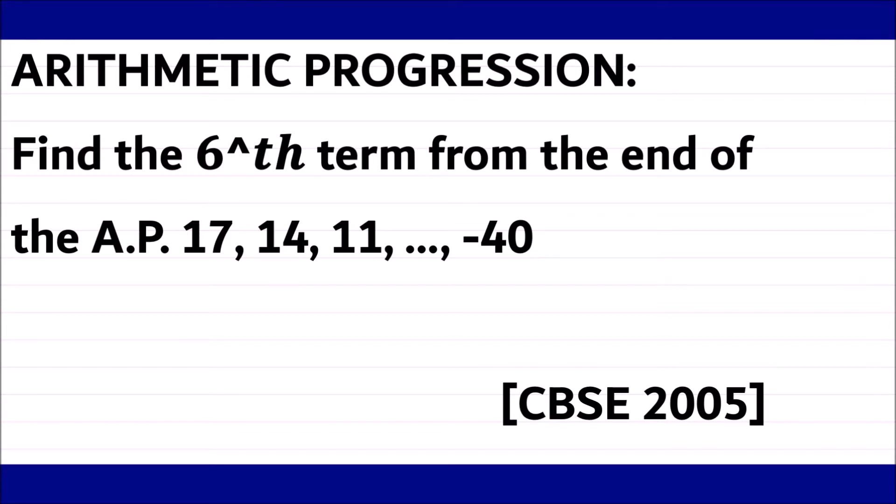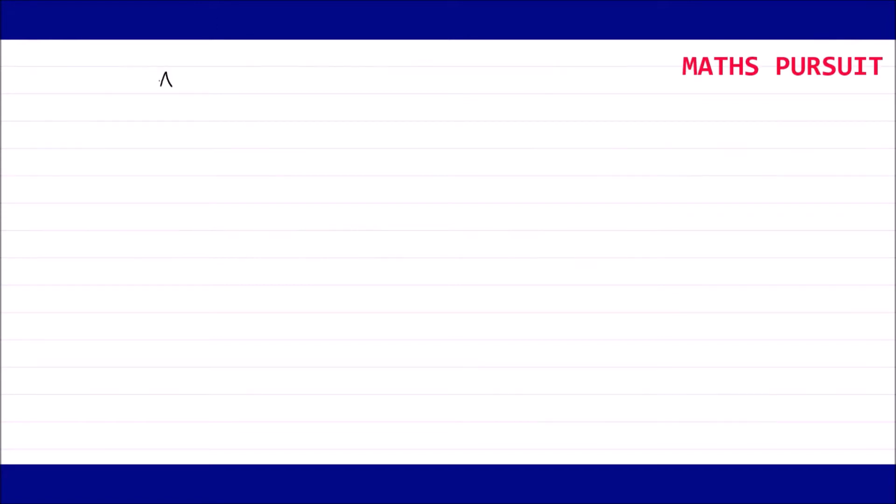Now let's see how we will move in answering this type of question. Let me write down the given arithmetic progression or whatever is being given. The number sequence or the arithmetic progression is 17, 14, 11, and towards the end is -40.